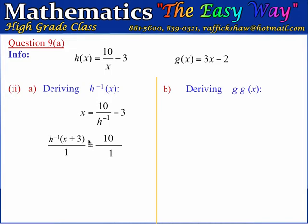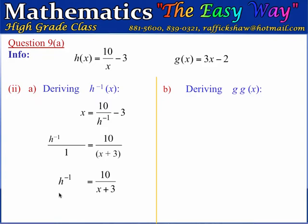We are left with 1 under h to the minus 1, and then we divide both sides by x plus 3. This gives us h to the minus 1 divided by 1 equals 10 divided by x plus 3, which reduces to h to the minus 1 of x equals 10 over x plus 3. That is our inverse function, which will map the range of h back onto the domain of h.